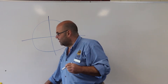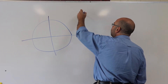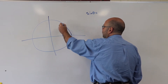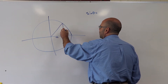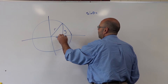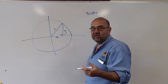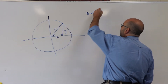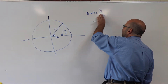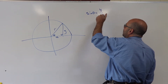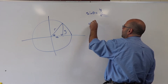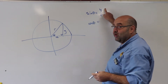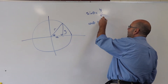Let me sketch this up again. We have x and y, and remember that sine of theta was y over r, and cos of theta was x over r. Those come from just the normal definitions of sine, cos, and tan using a right angle triangle.